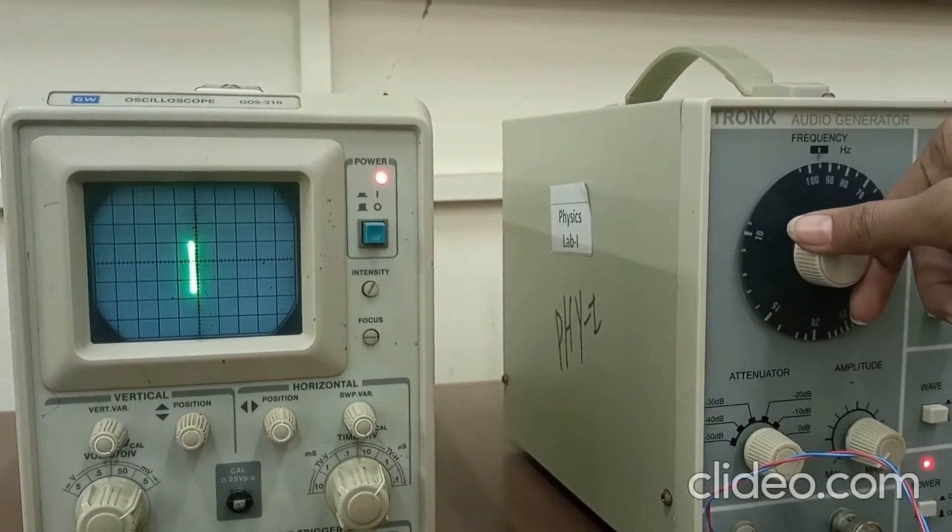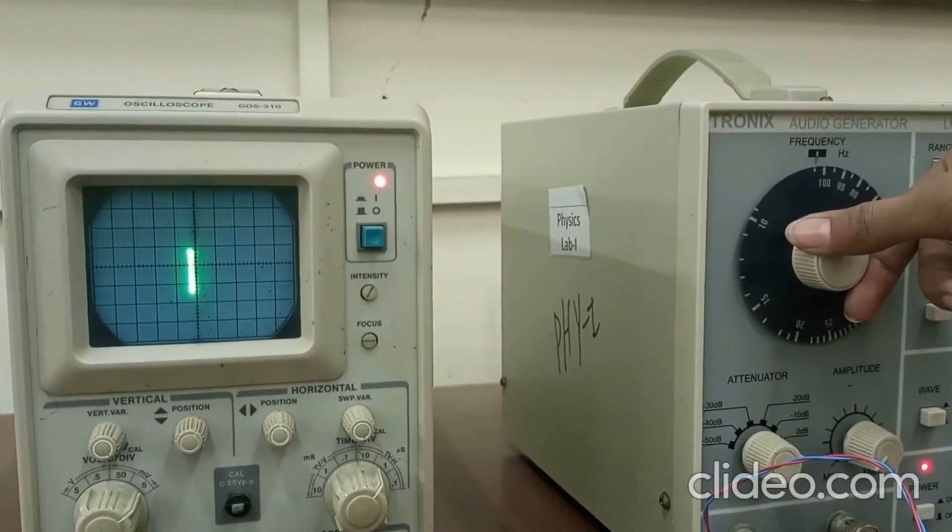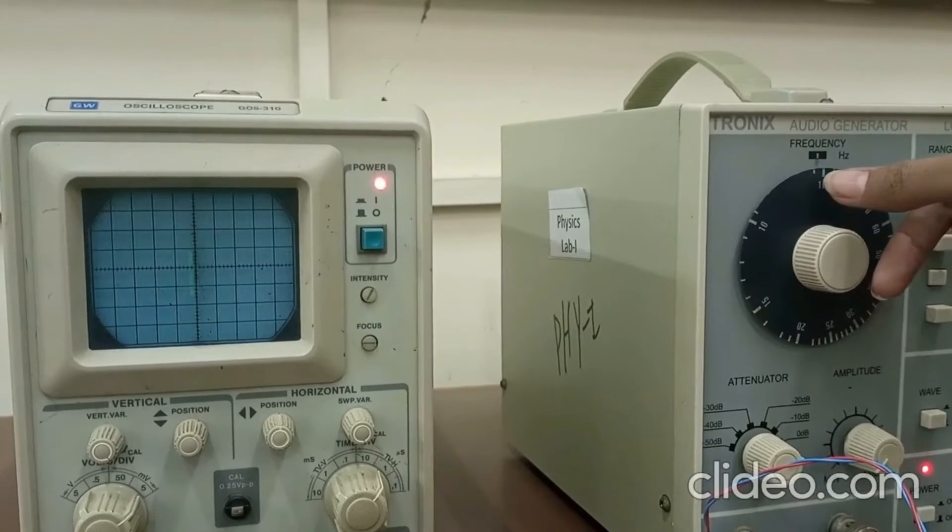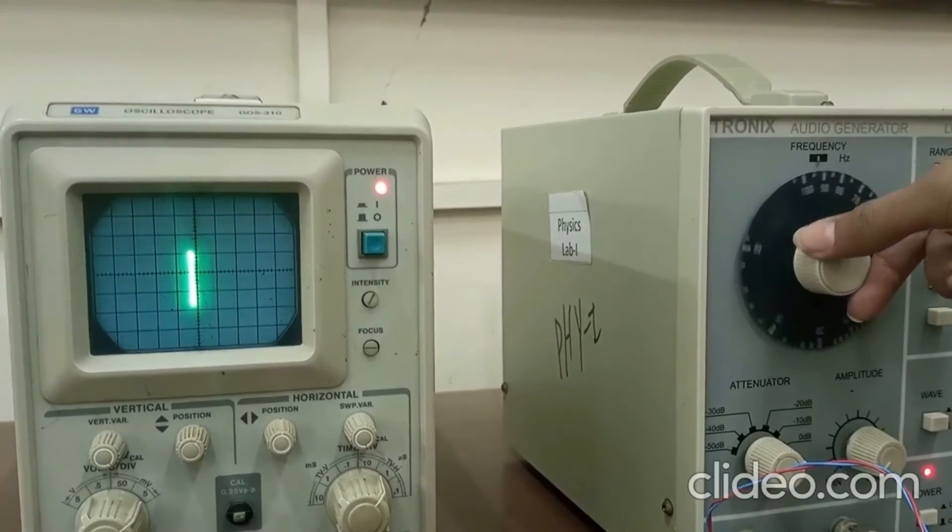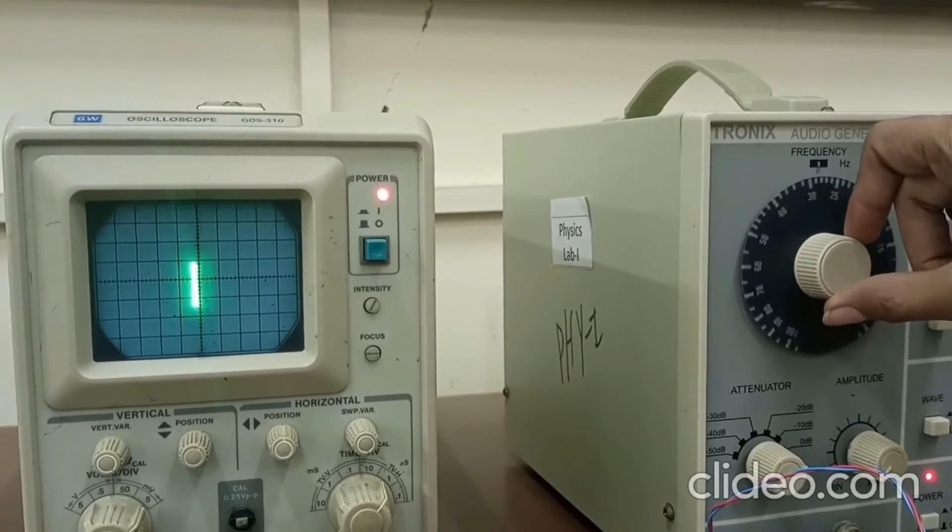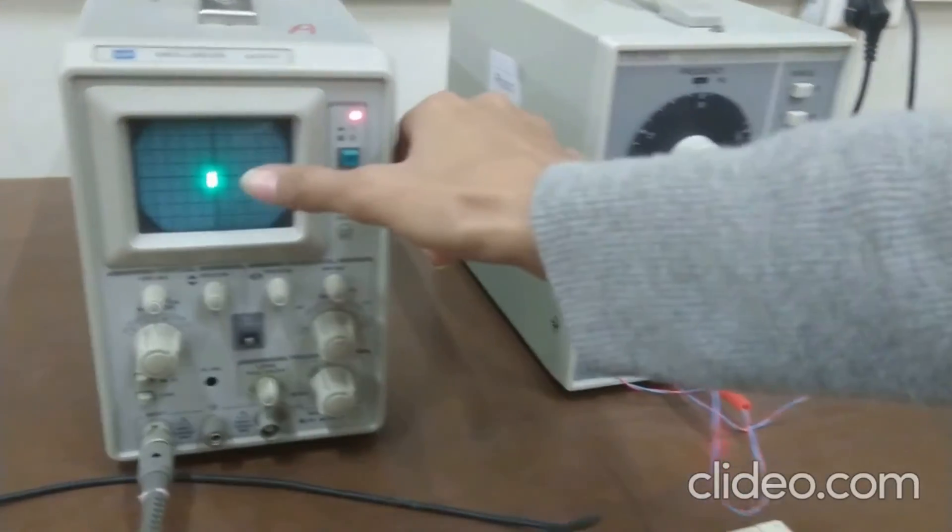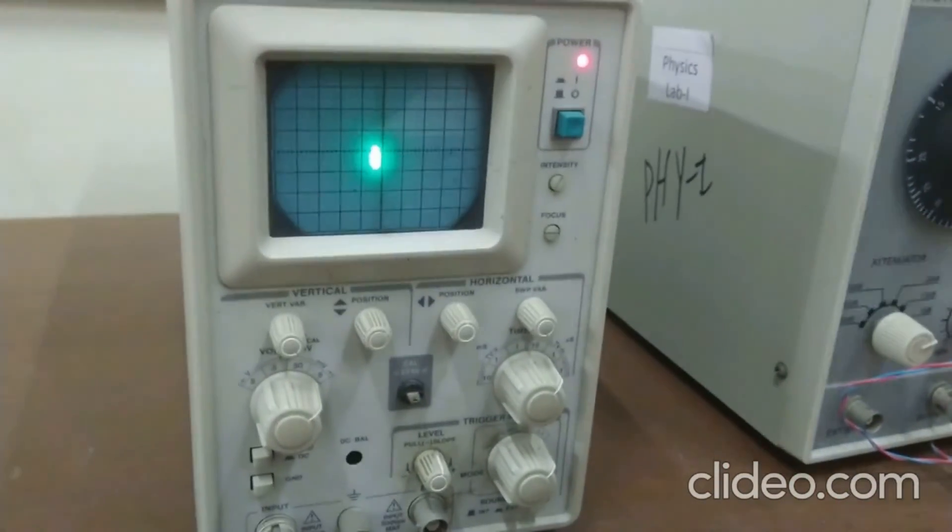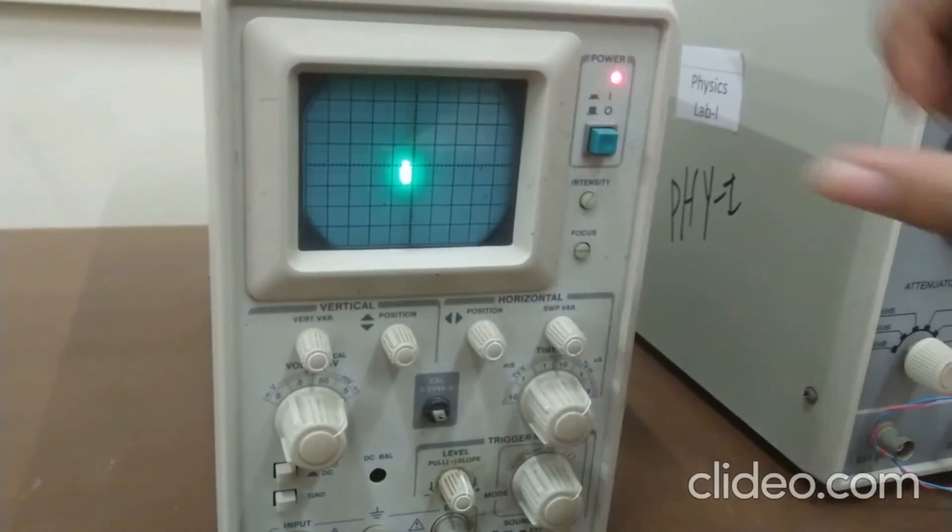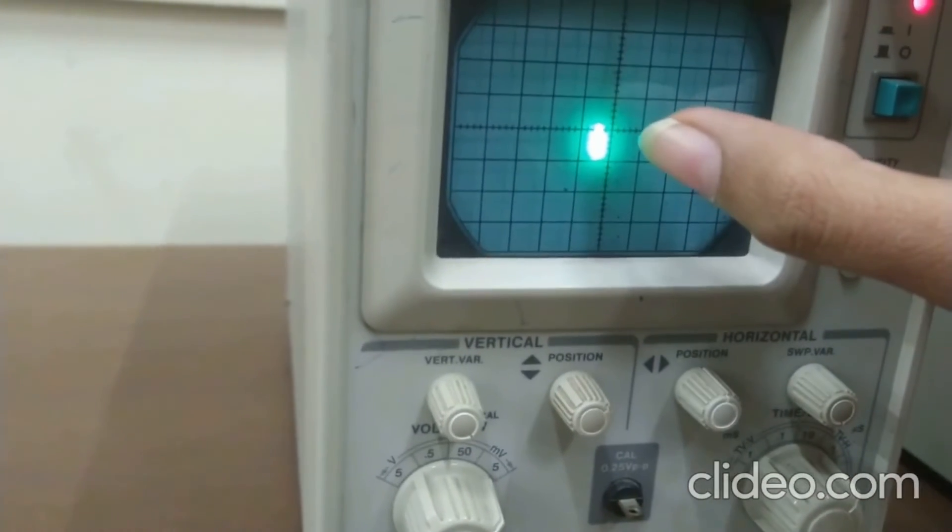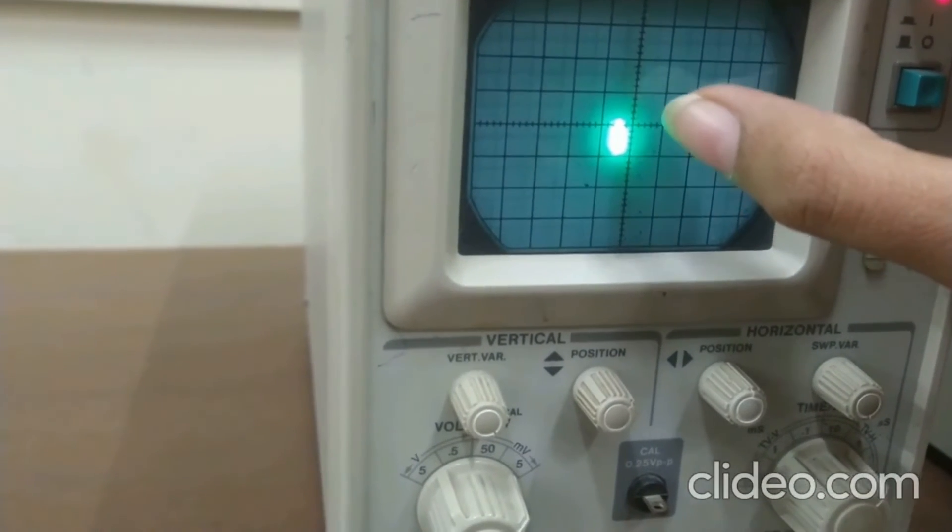And again, you have to complete the readings till your 100 kHz frequency. Here's the frequency from here and note down the amplitude. Let's say, on 10 kHz, we have amplitude 6.